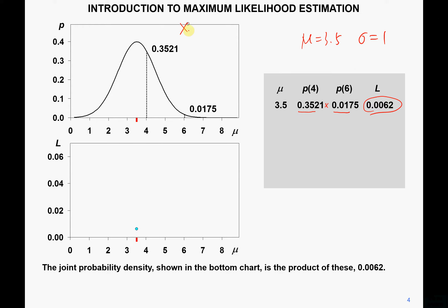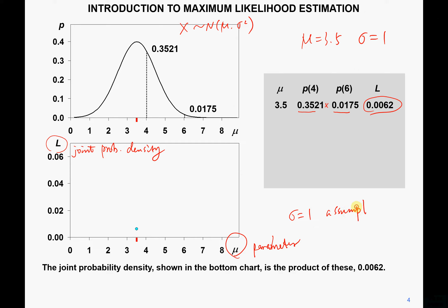The first plot shows the distribution of our normal random variable with mean mu and variance sigma squared. The second plot shows the joint probability density L as a function of the parameter mu. We assume sigma equals 1 and observe how the joint probability density varies with respect to mu.